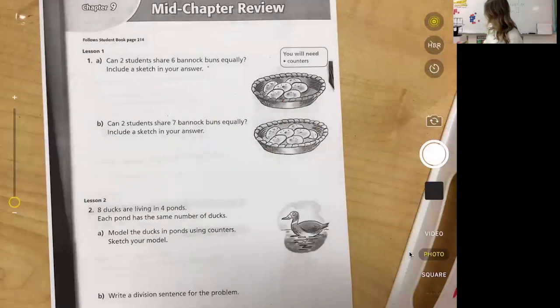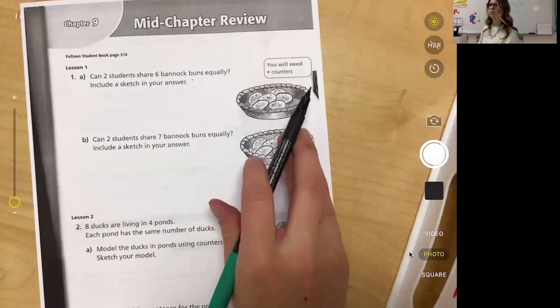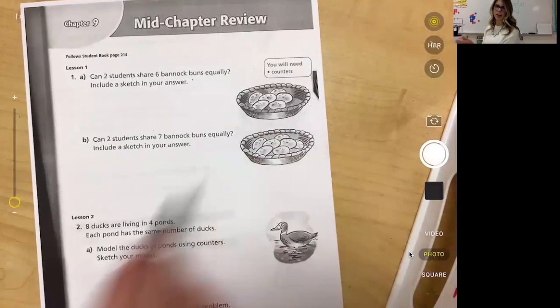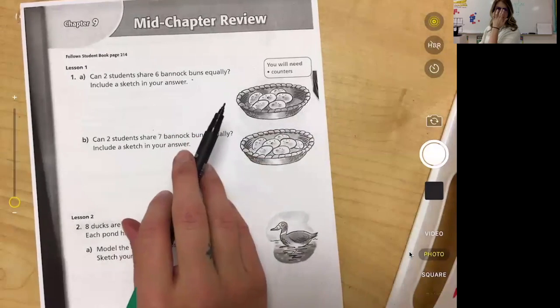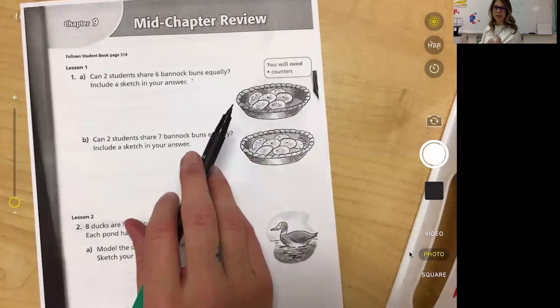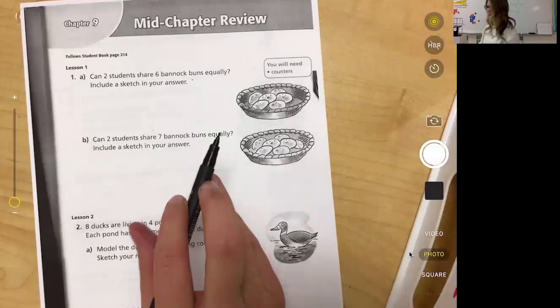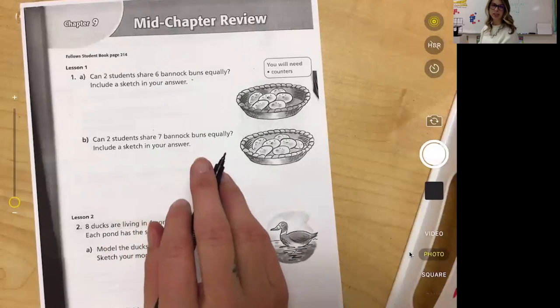So I'm going to go right into the screen share here. We have the mid-chapter review. It says you will need counters. Again, if you want to use Cheerios, Smarties, Rice Krispies, glitter, I don't care, whatever works for you for counters. Next week might be our last week of division depending on how this goes, so make sure you're working really hard to understand this.